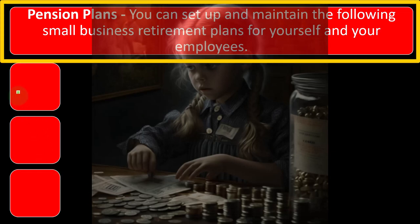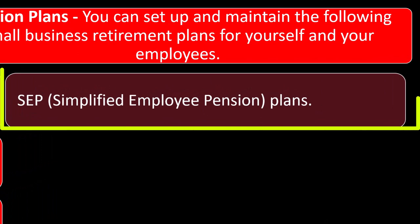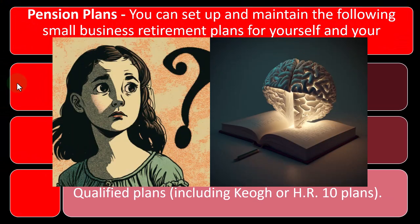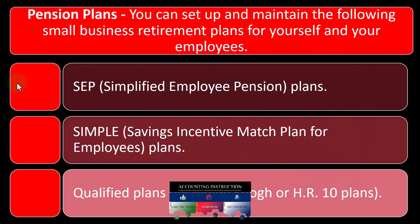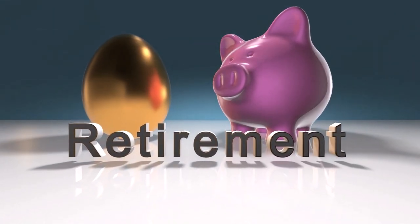You can set up and maintain the following small business retirement plans for yourself and your employees: the SEP, the SIMPLE, and other qualified plans. The general thought process for small businesses is: now I have a sole proprietorship. If I were a W-2 employee, one of the big benefits is a 401k plan, because you can put money into a retirement plan and receive tax benefits related to it, and possibly some employer matching as well.